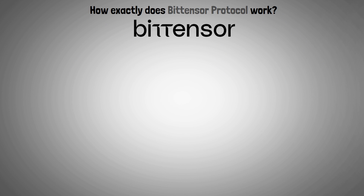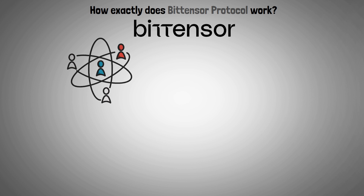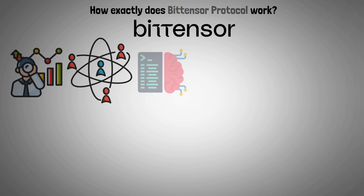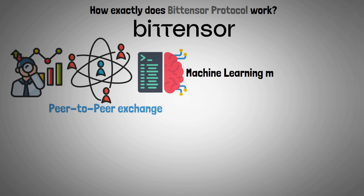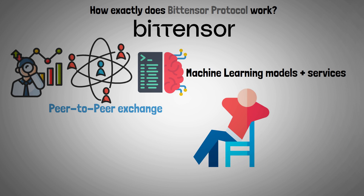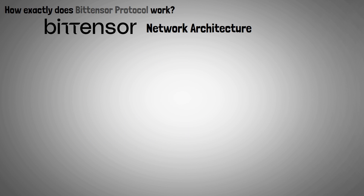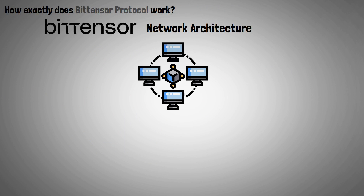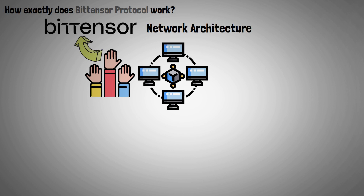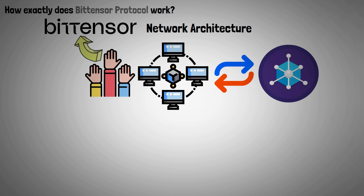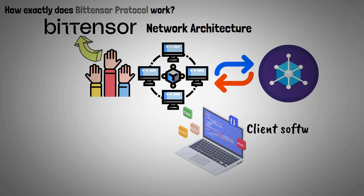The BitTensor protocol allows network participants to share predictions and machine learning capabilities, making peer-to-peer exchange and collaboration of machine learning models and services easier. The BitTensor network is made up of a collection of nodes that take part in the protocol. Each node is equipped with client software to communicate with other network nodes.